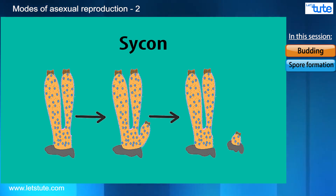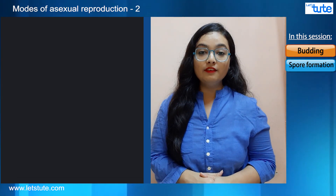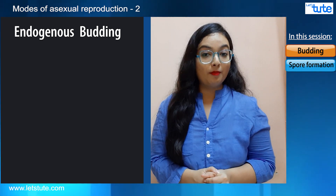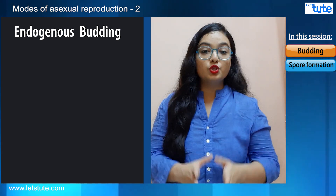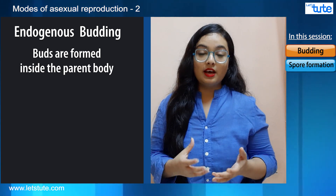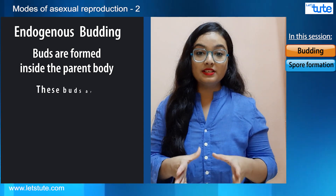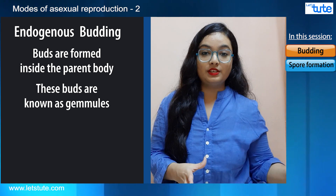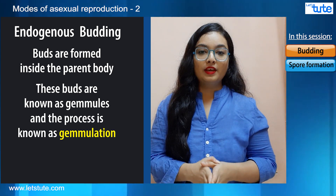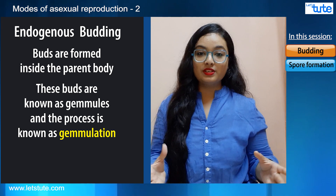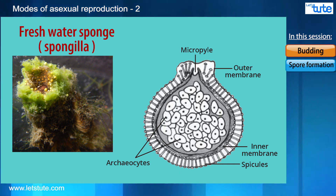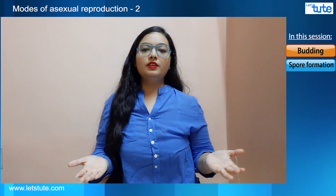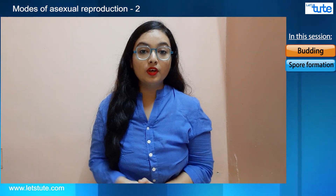Moving on to the second type of budding, which is endogenous budding. In endogenous budding, the buds or outgrowths are formed inside the parent body, and hence these buds are known as gemmules, and this process is known as gemmulation. The organism which uses endogenous budding is a freshwater sponge known as Spongilla. Spongilla uses endogenous budding during unfavorable conditions.